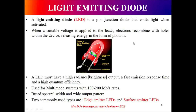A light emitting diode is a PN junction diode that emits light when it is activated. When a suitable voltage is applied to the leads, the electrons recombine with holes and release energy in the form of photons. A LED must have a high radiance output, a fast emission response time, and a high quantum efficiency. It is used for multimode systems with 100 to 200 megabit per second rates, and it has a broad spectral width and a wide output pattern. The two commonly used types of LED are edge emitter LEDs and surface emitter LEDs.